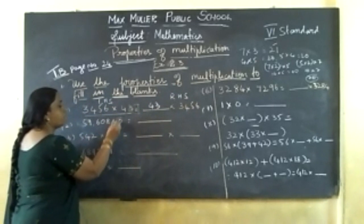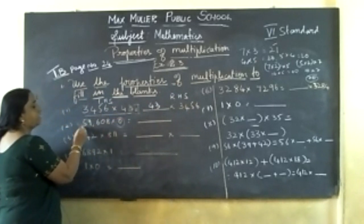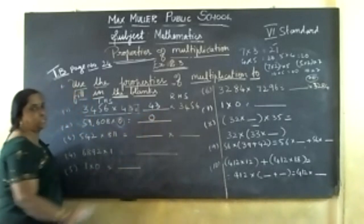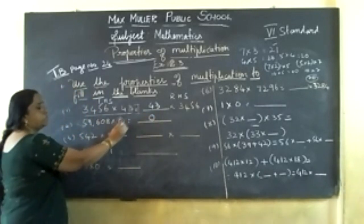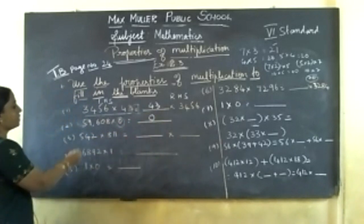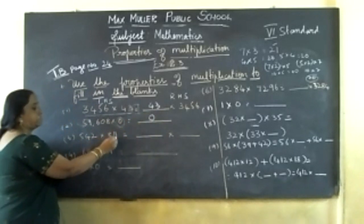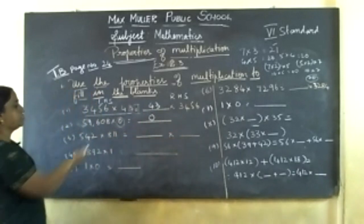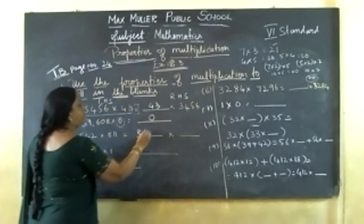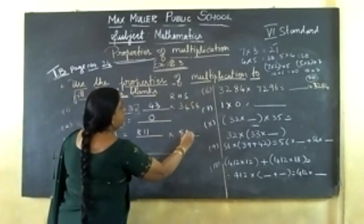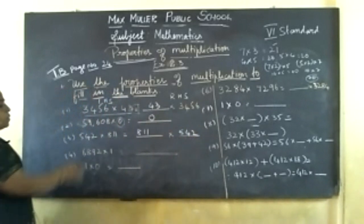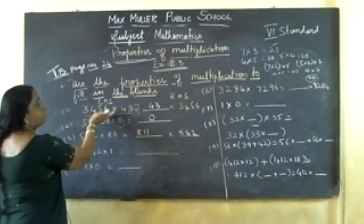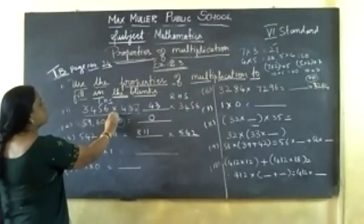If you multiply any number by 0, you have 59608 into 0 — the product is always 0. So, 542 into 811 is equal to dash. Both should be equal, means you can change the order also: 811 into 542. This is commutative property. This one is zero property. This is also commutative property.